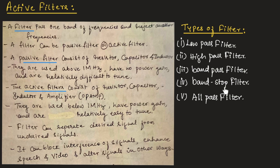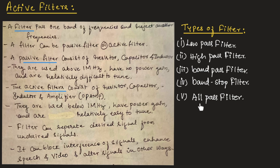A band-stop filter attenuates the signal with a certain frequency range and allows signal with frequencies outside the range to pass. It is generally used to eliminate unwanted signals. An all-pass filter allows all frequencies to pass through, but it does not change the amplitude of the signal — it can be used to modify the phase of the signal.